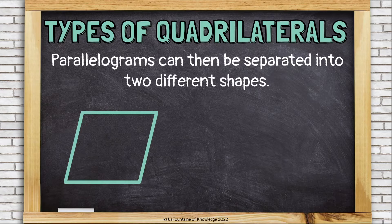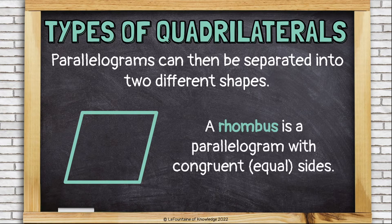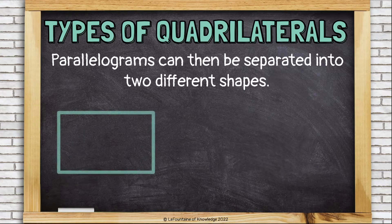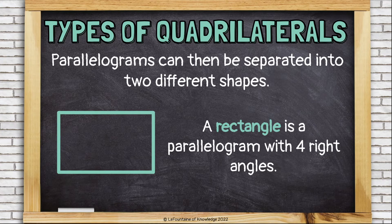Parallelograms can be separated into two different shapes. A rhombus is a parallelogram with congruent, or equal, sides — all four sides are the same length. A rectangle is a parallelogram with four right angles. It still has opposite parallel sides, but it also has right angles, and that makes it a rectangle.